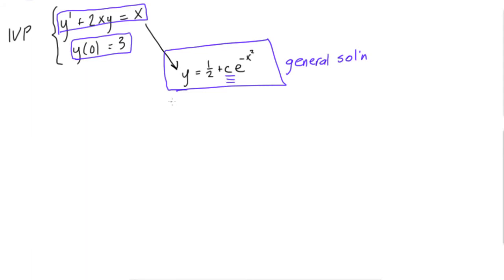So here we have y is going to be equal to 3, and x is going to be equal to 0 for these given initial conditions. So if we just plug these into our general solution,